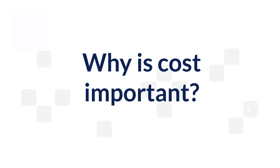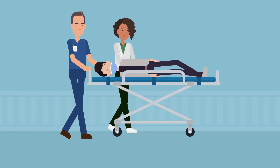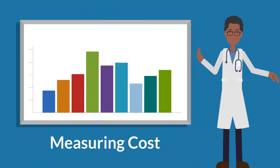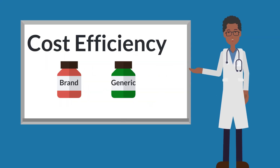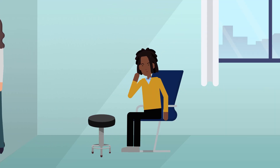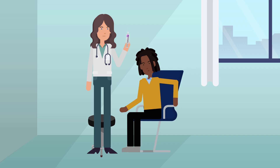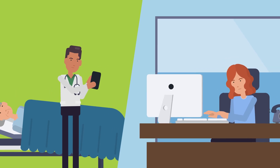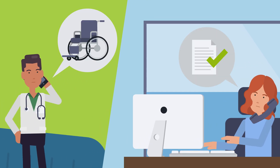Your performance in the cost category can provide information about the relevant costs of care during a defined period — whether that be for a procedure, condition, care setting, or overall care delivered to a patient. Measuring cost helps us understand if patients are getting the most cost-efficient care for their needs. Cost efficiency isn't cutting corners; it's looking for lower cost alternatives when possible, emphasizing preventative care, and considering whether additional services can be provided to reduce costs from complications and worsening symptoms. This performance category may also reward care coordination, which can reduce costs by preventing duplicative services and readmissions.